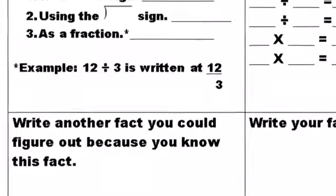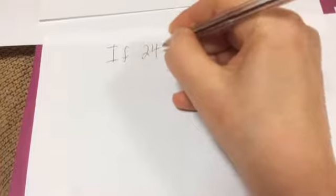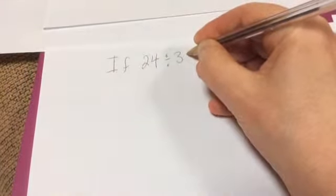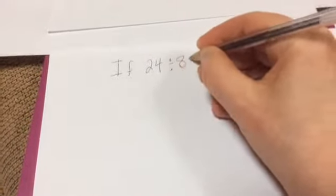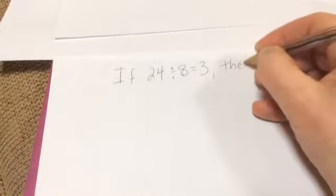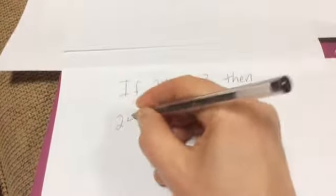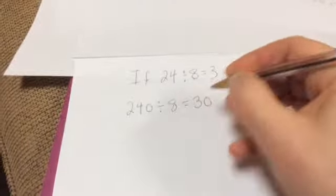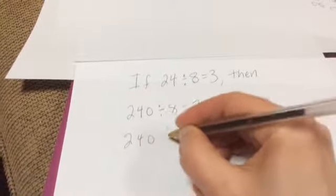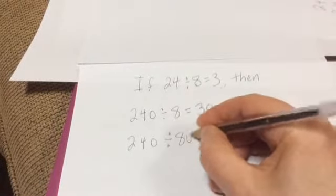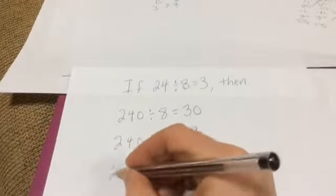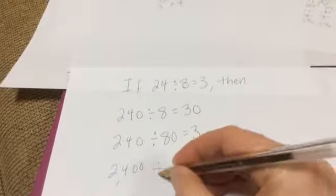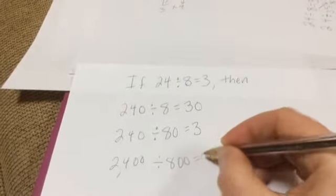Here comes another one. Write another factor you could figure out because you know this fact. Okay, now this one was a little tricky, but let's use what we remember about adding zeros to numbers to show that we've multiplied them by 10, 100, or 1,000. So if 24 divided by 8 equals 3, then 240 divided by 8 equals 30. A little easier to do would be put a 0 on both of them: 240 divided by 80 equals 3. 80, 160, 240.